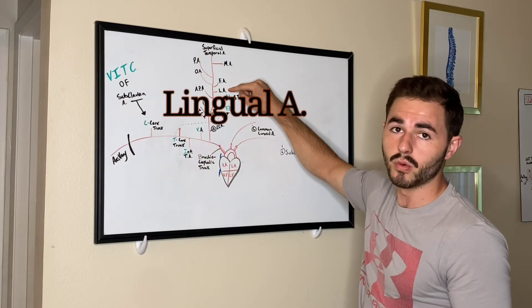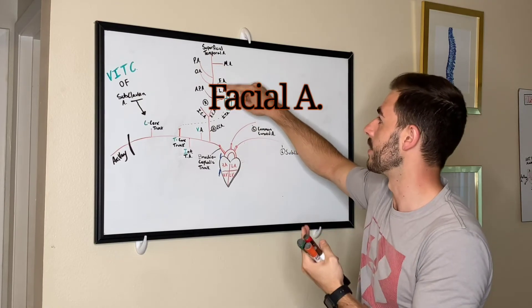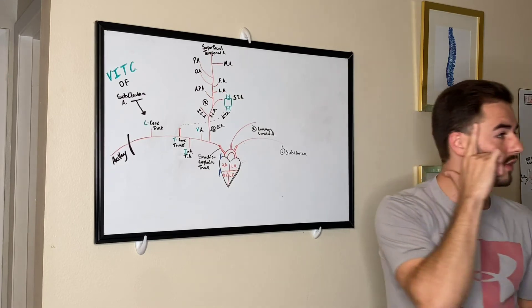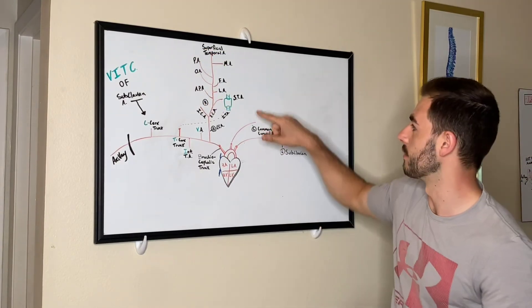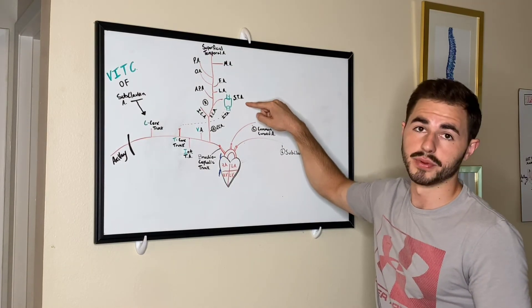So STA is superior thyroid artery. LA is lingual artery, just under the chin. And then F is for facial, so facial artery. And then you have the maxillary artery up here. And then you're going to have the superficial temporal artery at the top. So don't confuse the bottom STA with the top STA, which is superficial versus superior.